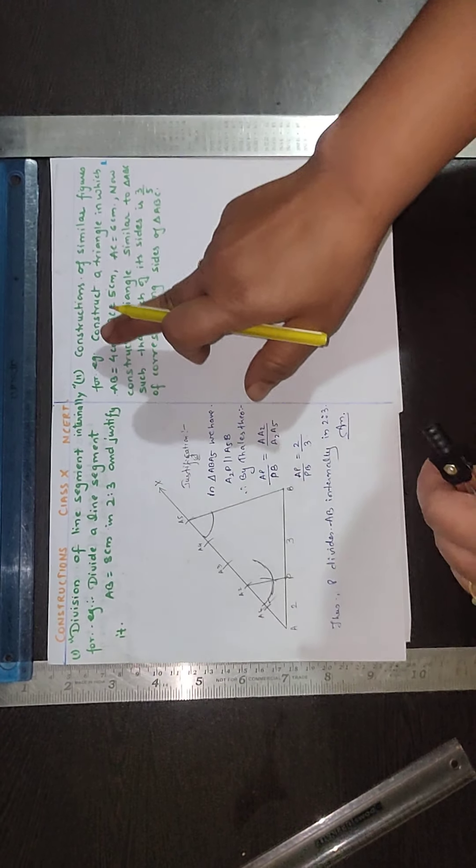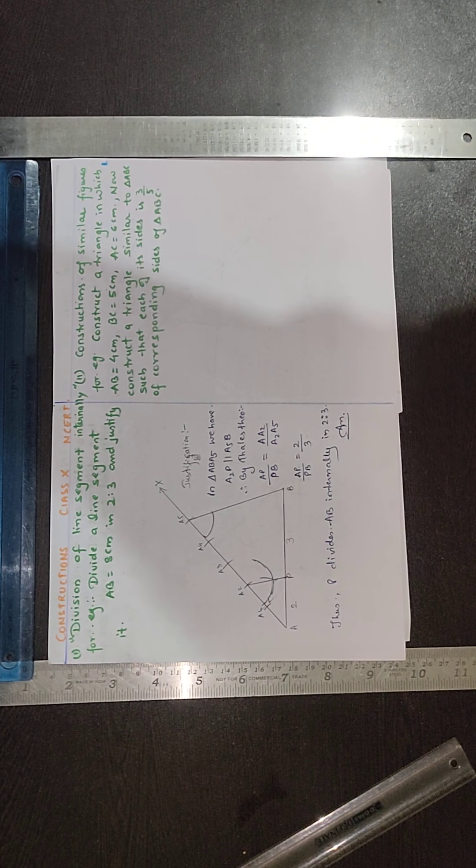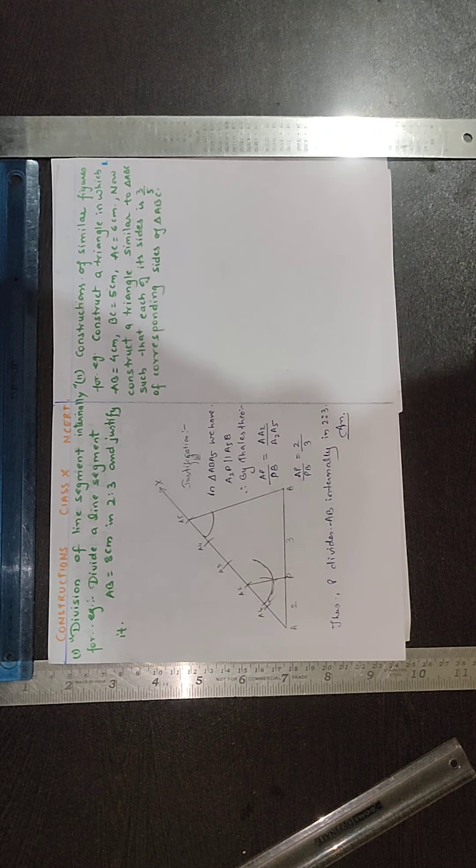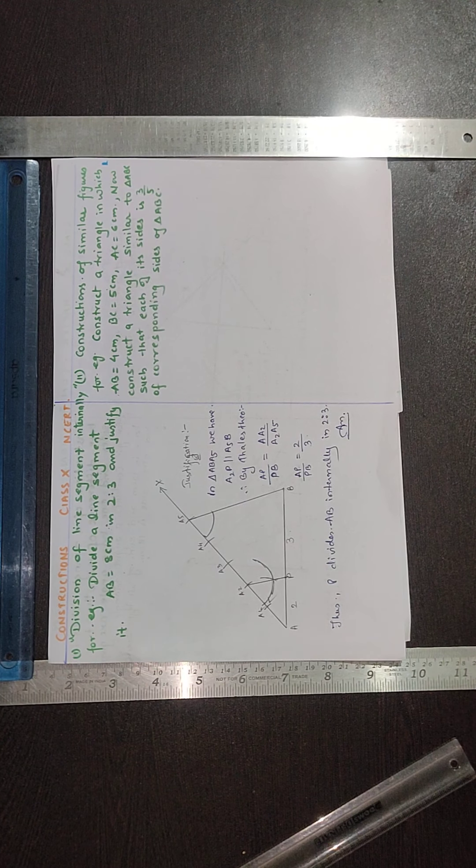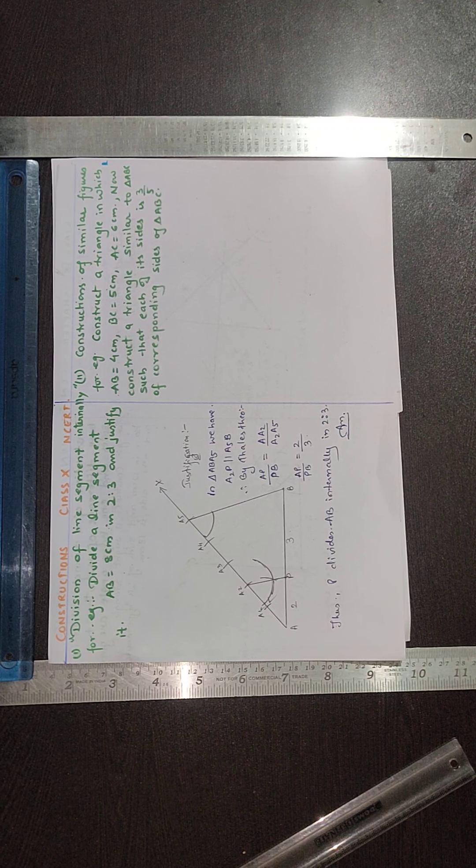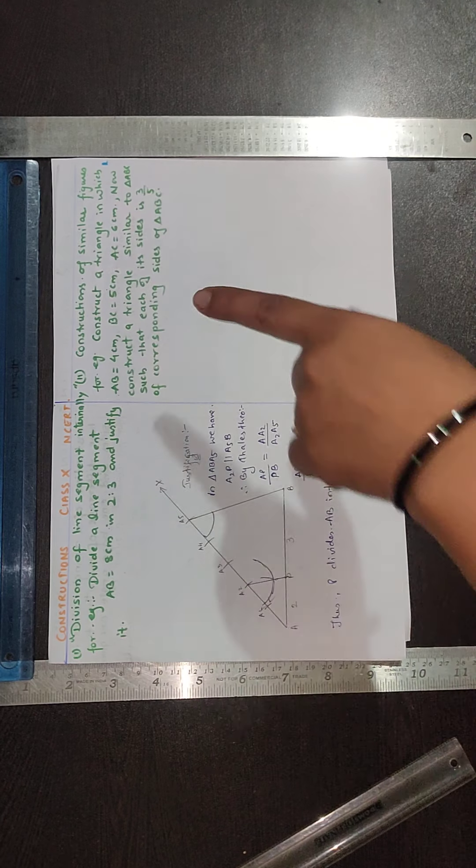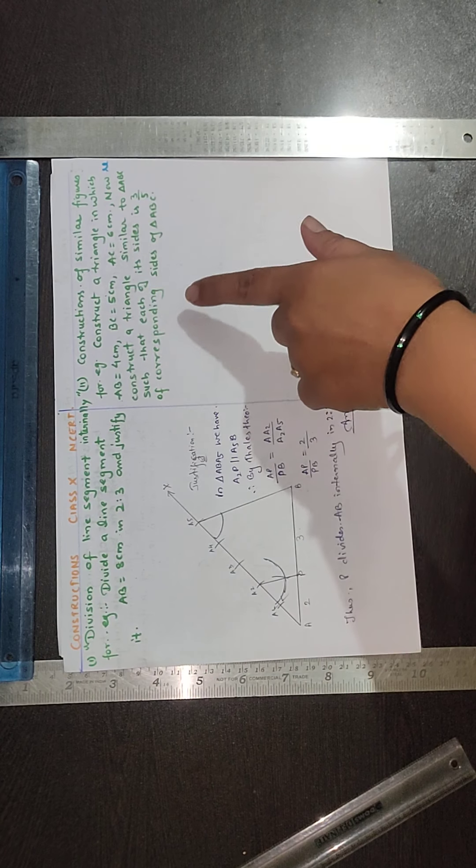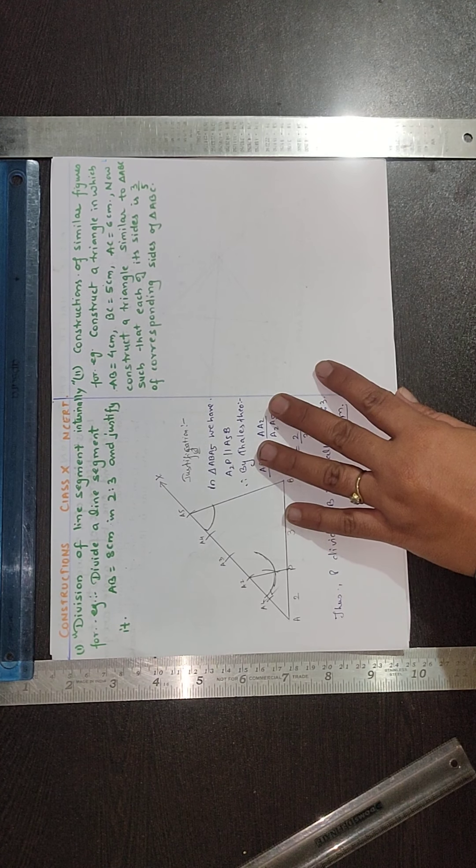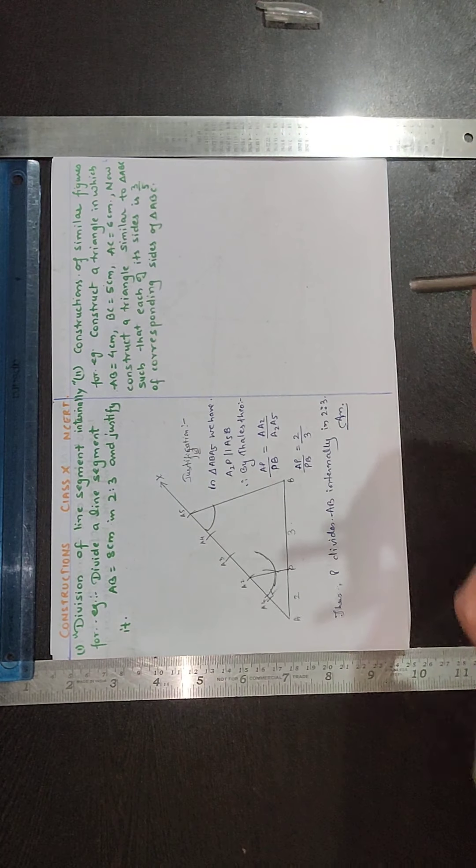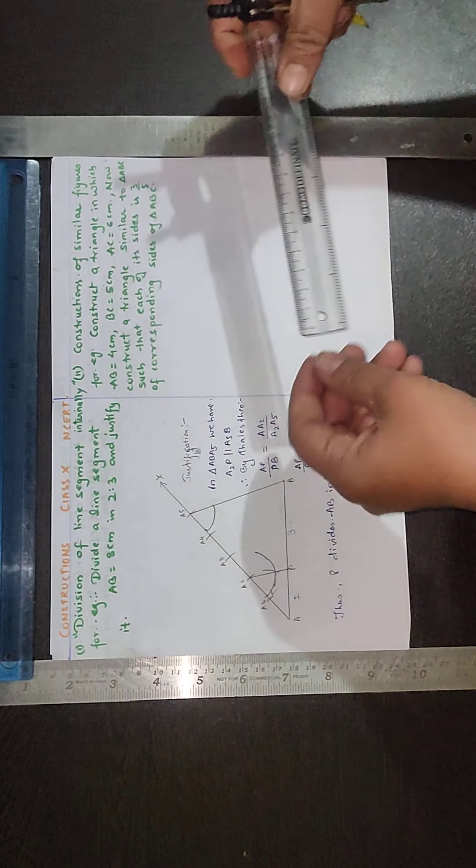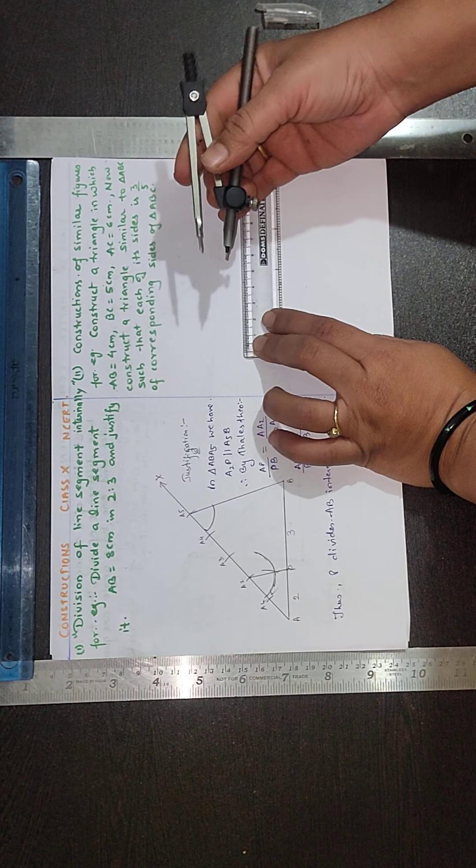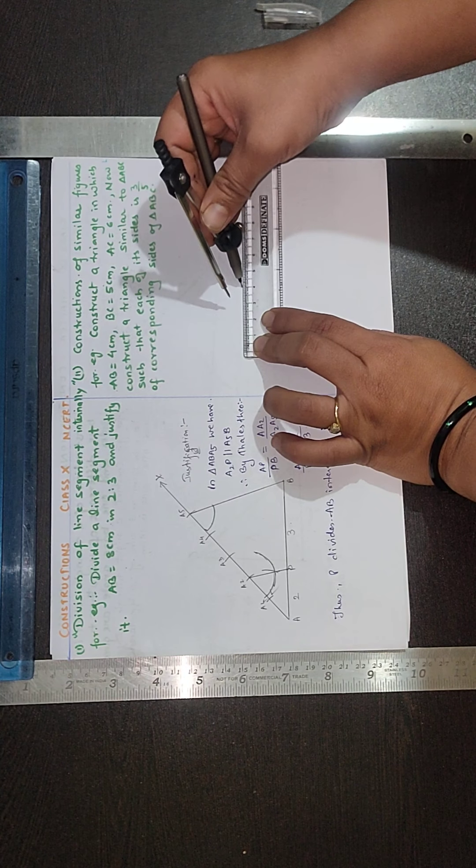Next is construction of similar figures. For example, construct a triangle in which AB, BC and AC are given. We need to construct a triangle which is similar to triangle ABC such that each of its side is 3 by 5 of the corresponding side. Because all 3 dimensions are given, we can take any dimension as baseline. I am taking AB equals 4 cm as base.